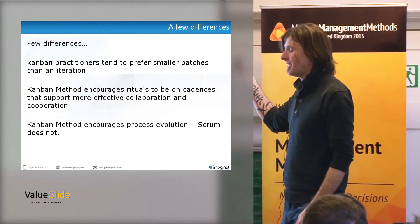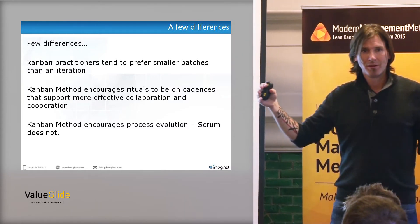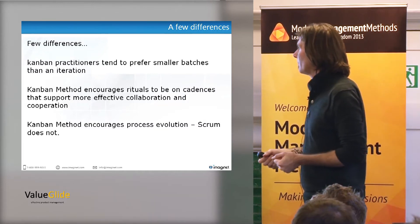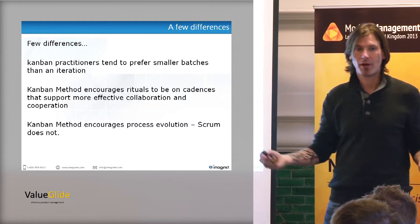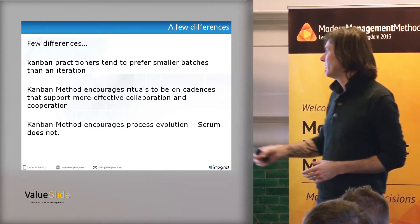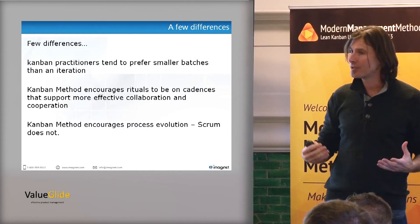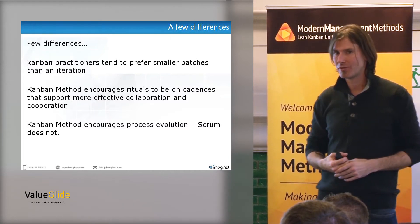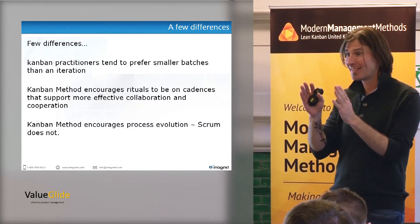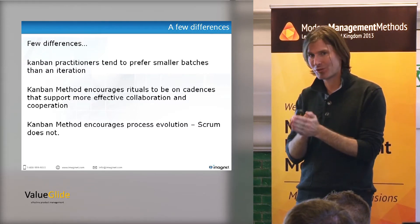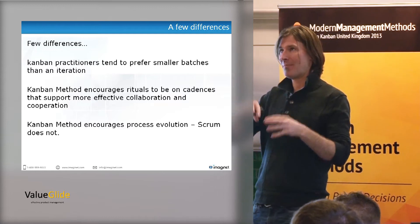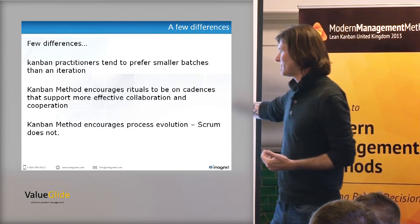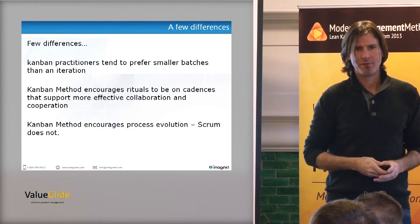A couple of differences though: Kanban practitioners tend to like smaller batches — we prefer work item over iteration. We prefer cadences as opposed to time boxes. And I think the Kanban method encourages process evolution in a way that Scrum does not, based on my conversations with Scrum practitioners and reading the guide. The existence of Scrumban and Scrum-ish things is an indication that evolution needs to happen, but the Scrum guide doesn't necessarily advocate that evolution.